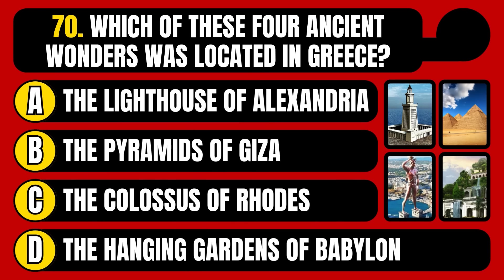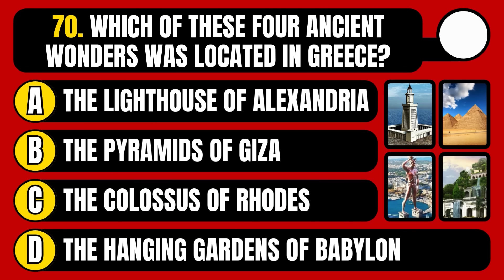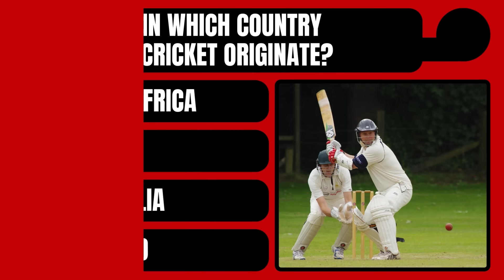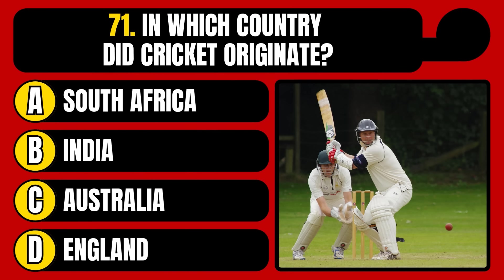Which of these four ancient wonders was located in Greece? The Lighthouse of Alexandria, the Pyramids of Giza, the Colossus of Rhodes, or the Hanging Gardens of Babylon? The correct answer is option C, the Colossus of Rhodes.